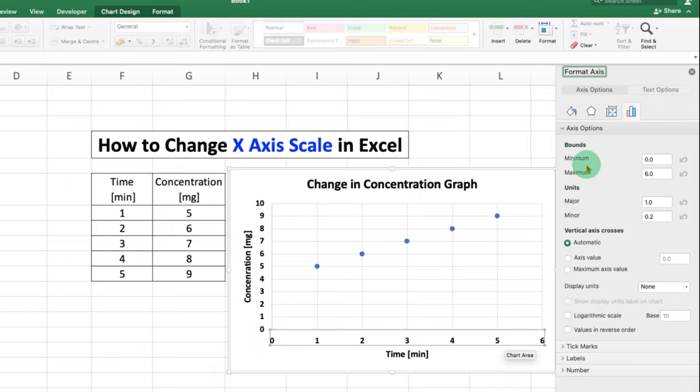So under the bounds, you will see minimum and maximum. If you want to start from for example 0, you can enter the 0. Or if you want to start from 1, you can start from 1 and enter.